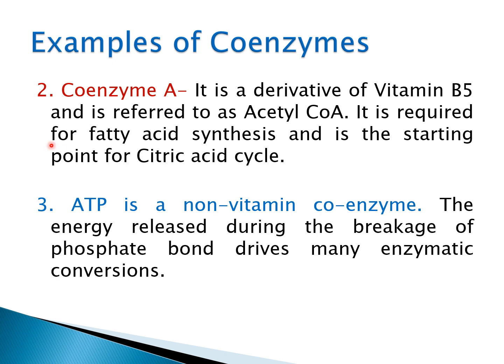More examples of coenzymes: Coenzyme A is a derivative of vitamin B5, generally called acetyl-CoA. Acetyl-CoA is required for fatty acid synthesis and is the starting component in the citric acid cycle. Another example is ATP, a non-vitamin, purine derivative. The energy released during breakage of the phosphodiester bond in ATP is used for enzymatic conversions.